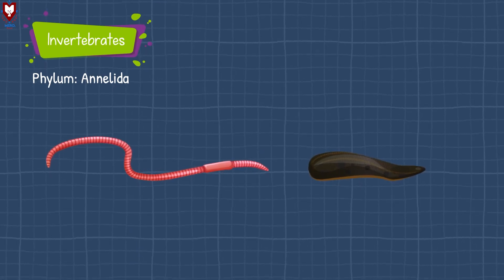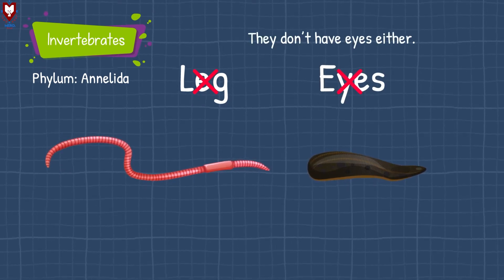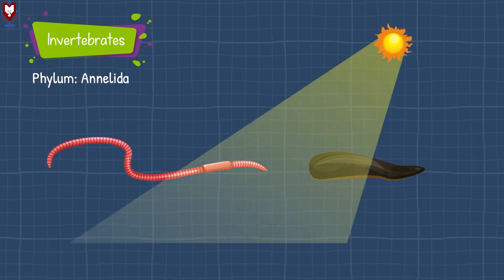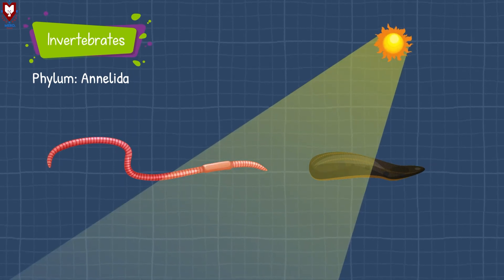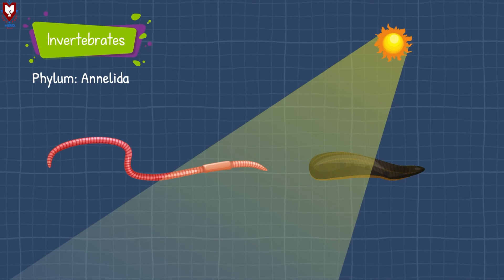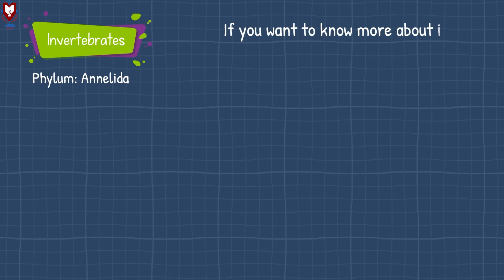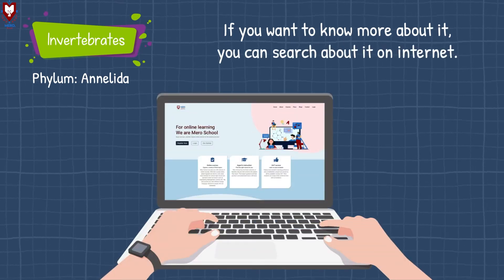Did you know that earthworms do not have eyes? They have light receptors in their body instead. If you want to know more about how their body senses light, you can search about it on the internet.